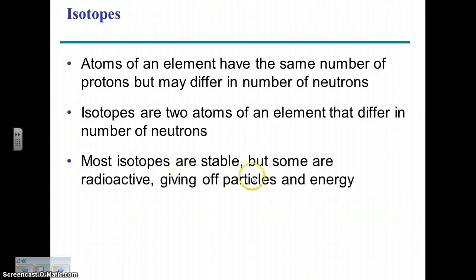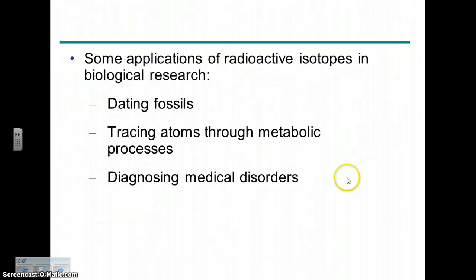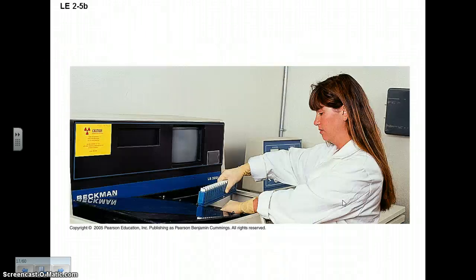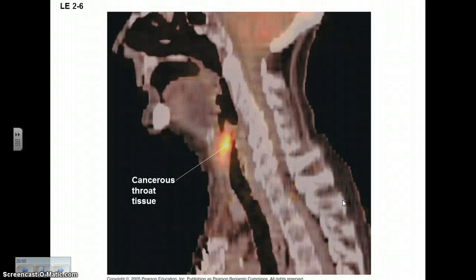Some of these are radioactive isotopes, that is, they're unstable, and they can break down and give off energy. These isotopes can be used for many things, like dating fossils, carbon dating, for example. And in biomedicine, they're used a lot to diagnose problems. For example, here, to identify certain cancerous tissues, you can use these radioactive isotopes.